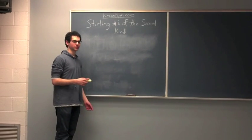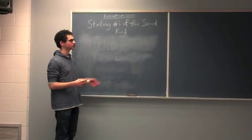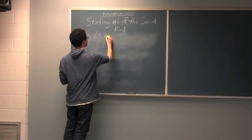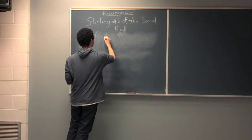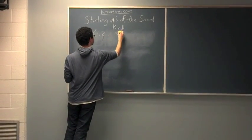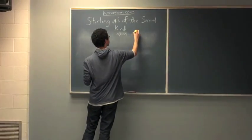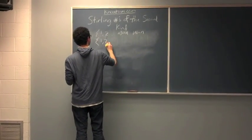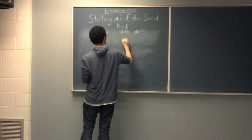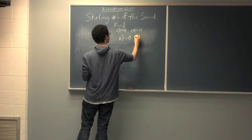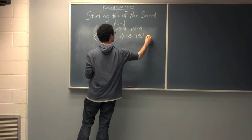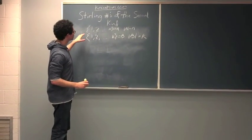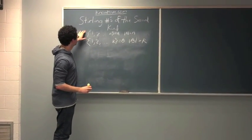So, something to note about Stirling functions and Stirling numbers and onto functions is, so say we had a set 1, 2, n, so it's size n. We'll call it A, where the cardinality of A equals n. And say we had 1, 2, k. We'll call this B. The cardinality of B equals k.